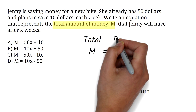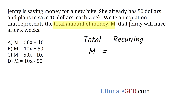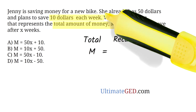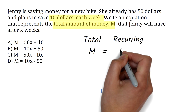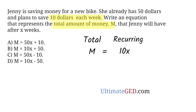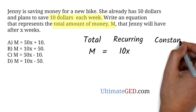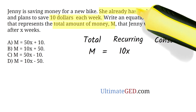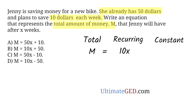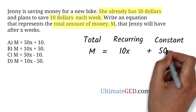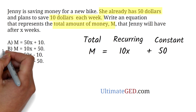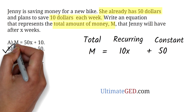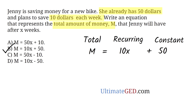Next, we have the recurring — the value that keeps repeating, which is the value with the x. We have $10 each week, so this will be 10x. Then finally, we have our constant — here it is $50. Since she already has the $50, we will have plus 50. Therefore, option B is the answer: M equals 10x plus 50.